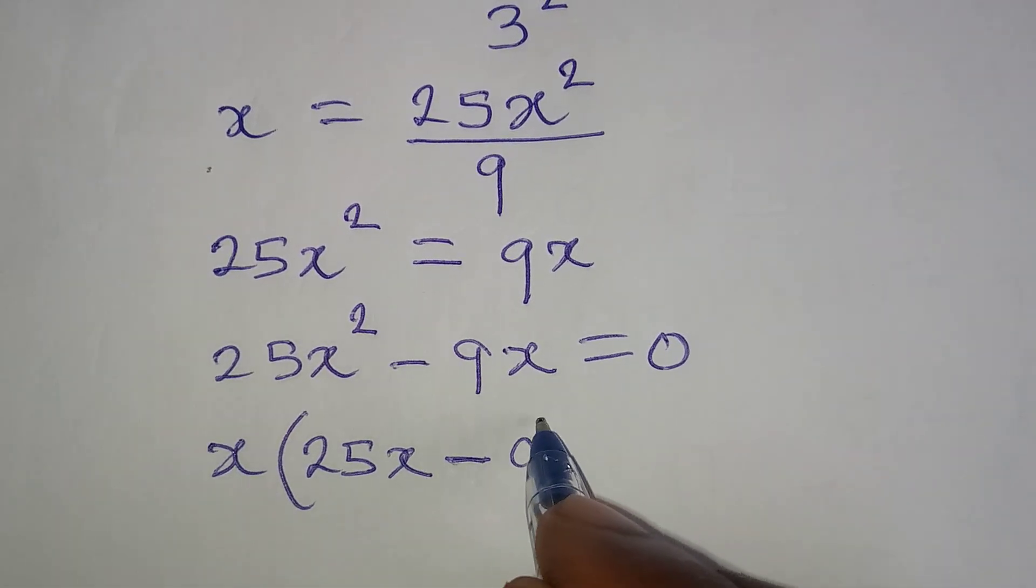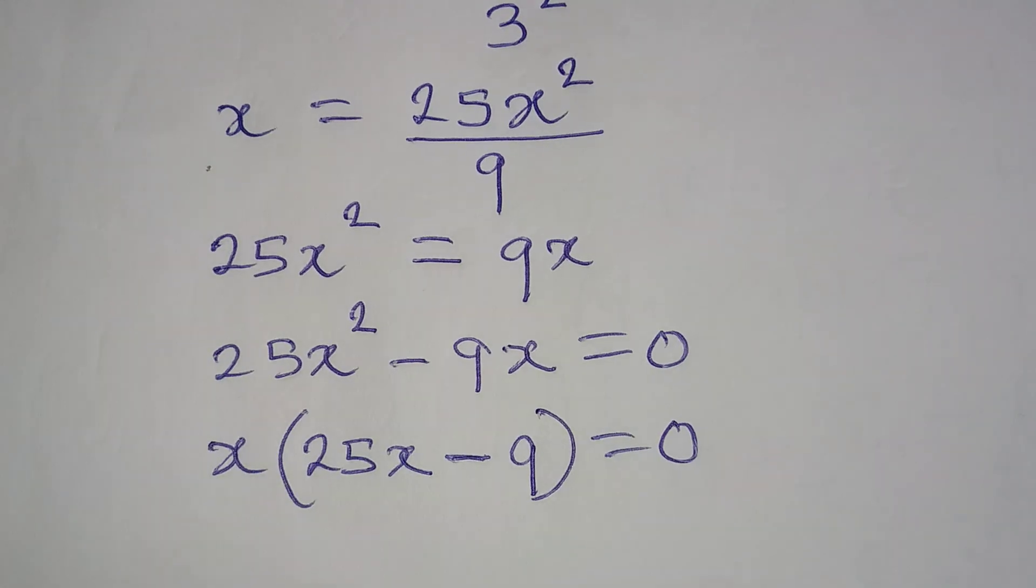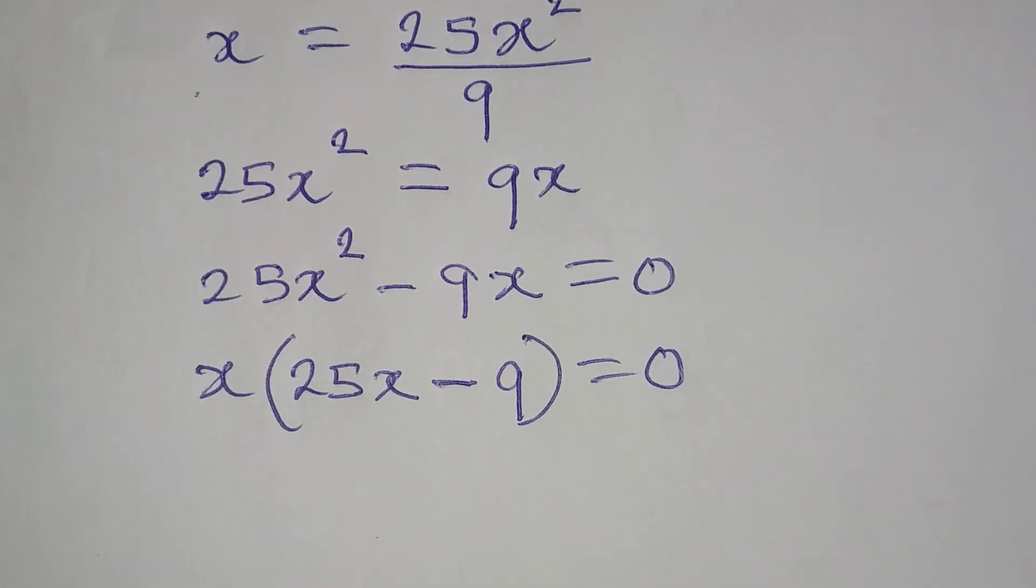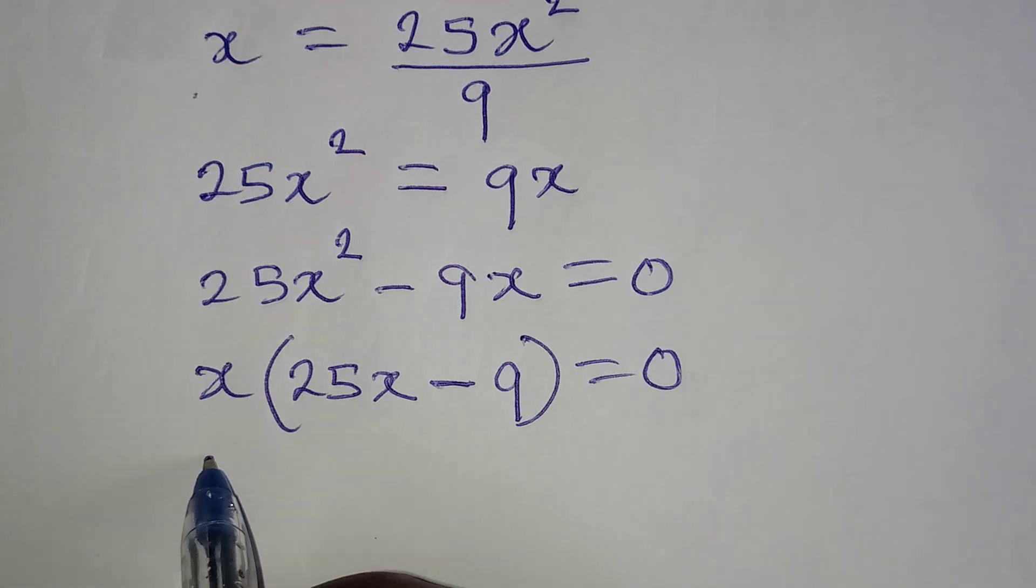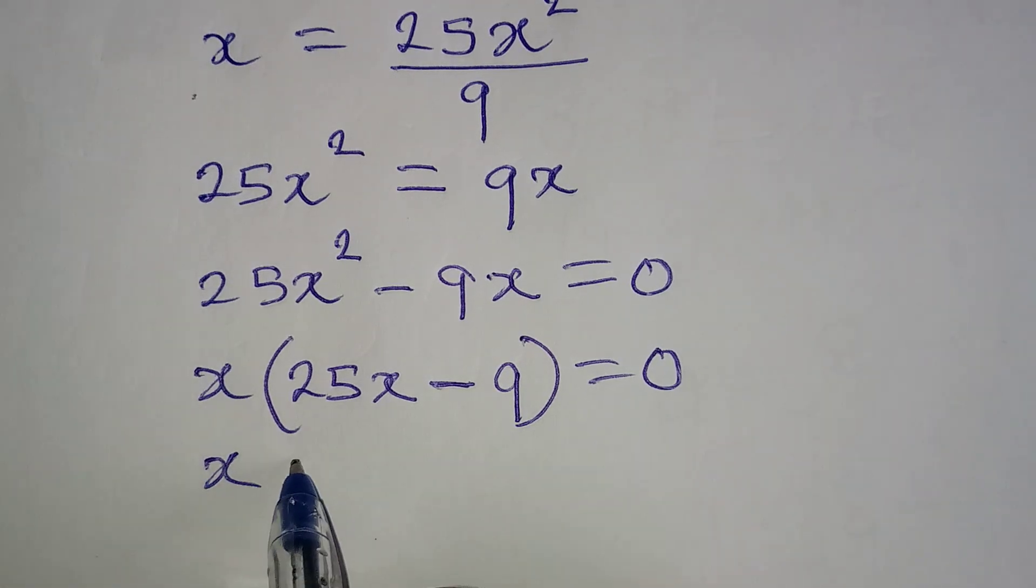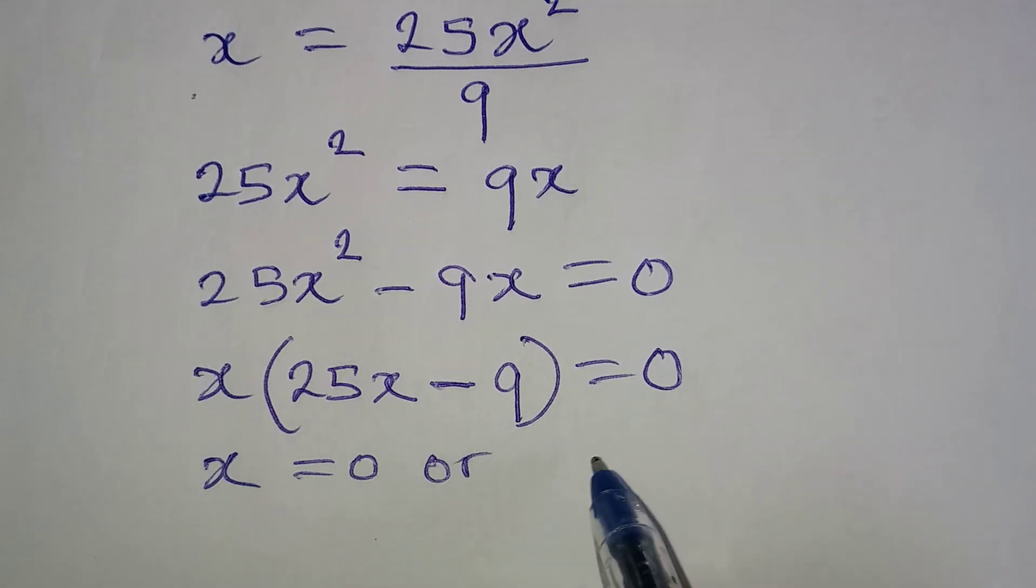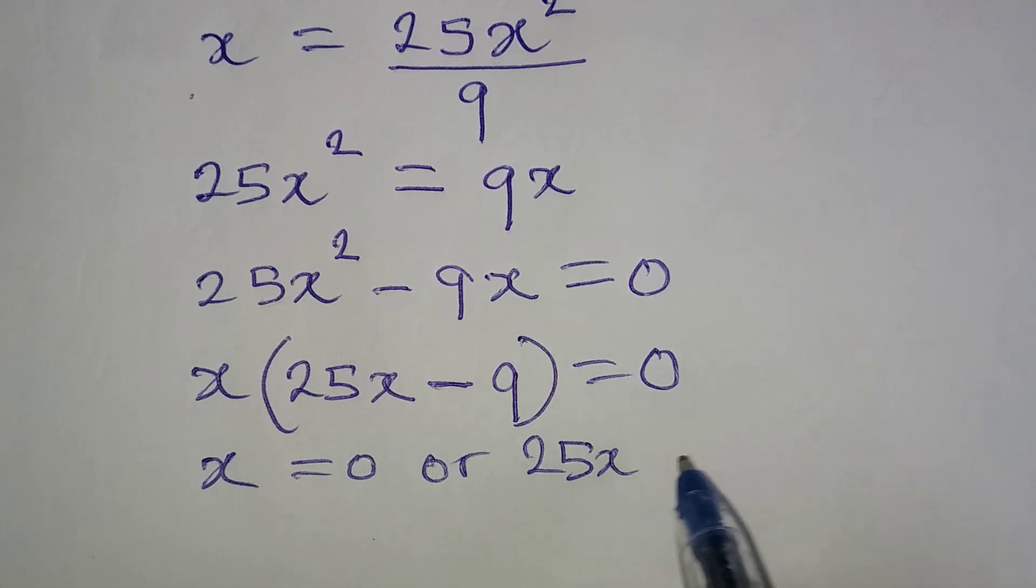Because x has already come out and it's equal to 0. From here, we'll apply 0 product rule. And that says, it's either x is equal to 0 or 25x minus 9 equals 0.